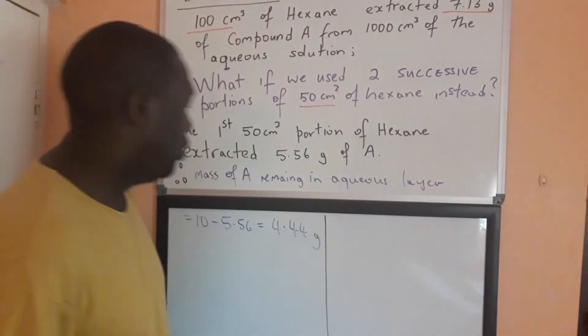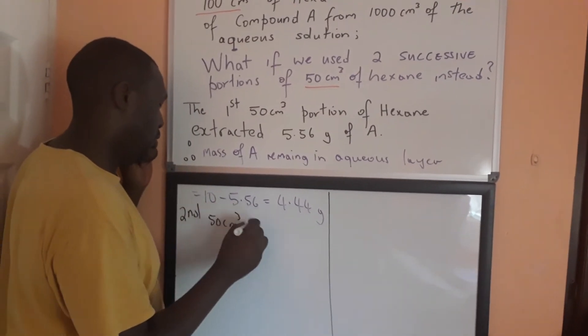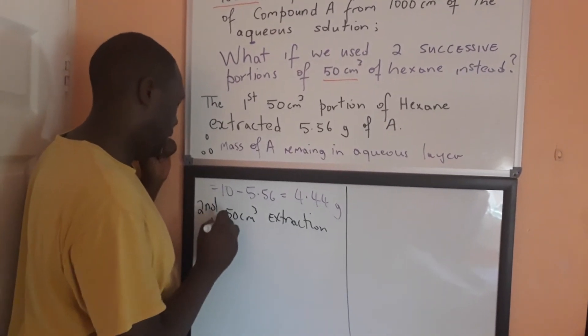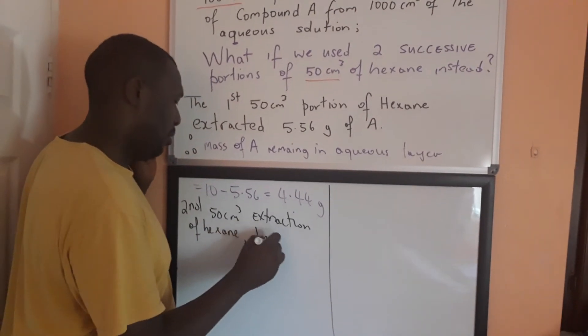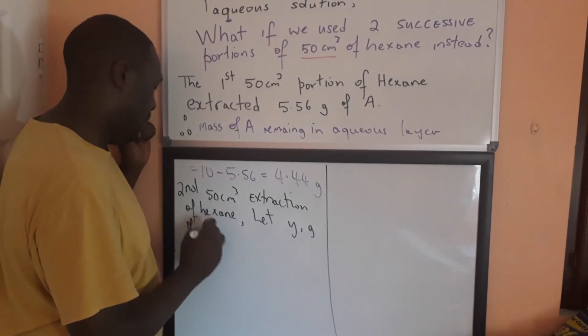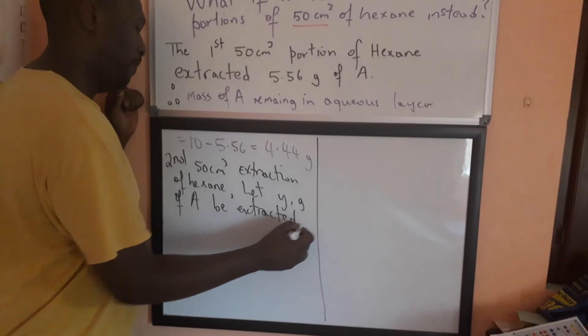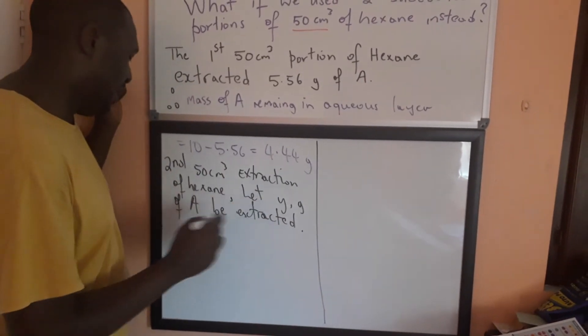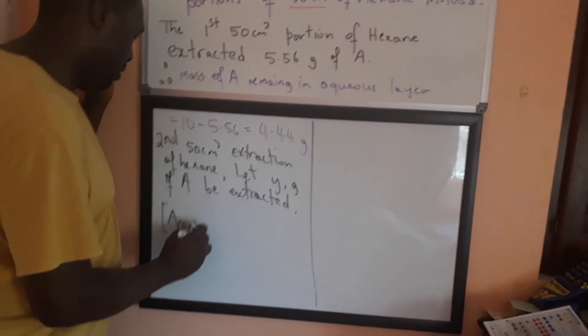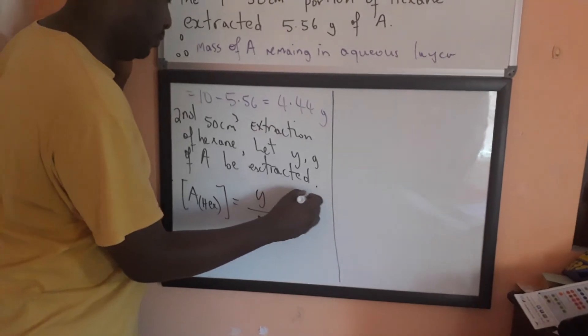Now, we're going to go to our second extraction. So, for our second 50 cm cubed extraction of hexane, we're going to let Y grams of A be extracted. Now, if Y grams of A is extracted, then the concentration of A in hexane will be Y grams over 50 centimeter cubed.